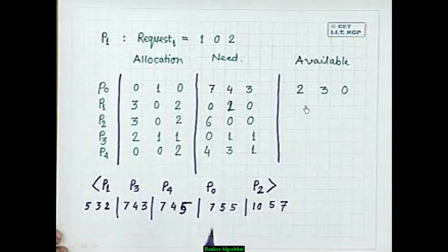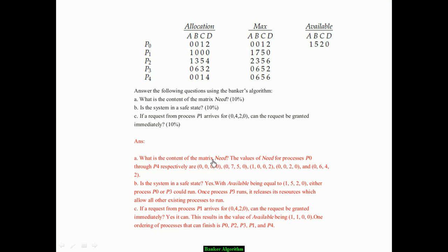We then re-run the safety algorithm with the updated values — Work = [2,3,0], Finish = false — and repeat the same process. The result is again a safe sequence: P1, P3, P4, P0, P2. You can practice this as an exercise.